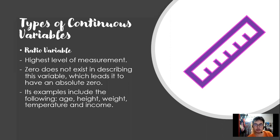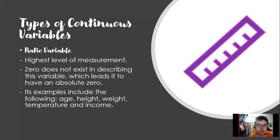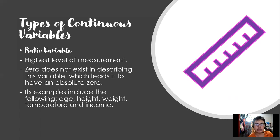Our first type is the ratio variable. It is continuous because it is described by either a whole number, decimal, or fraction. It is the highest level of measurement. Zero does not exist meaninglessly here — it leads to an absolute zero. For example, if my height is zero, it means I have no height. If my weight is zero, I have no weight. If my age is zero, it means I am not born yet. So zero has meaning in describing this variable. Examples include age, height, weight, temperature, and income. When temperature is zero, it means the refrigerator is cold. When income is zero, it means I have no earnings.